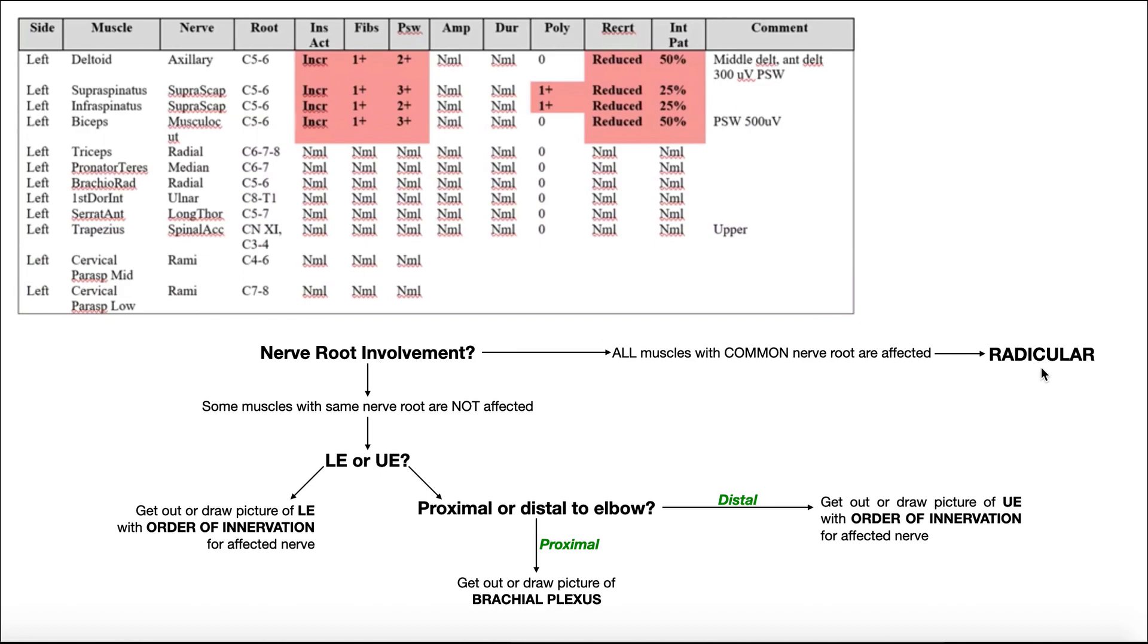Now in order to be a true radiculopathy and have radicular symptoms, all the muscles with that common nerve root would have to be affected negatively.